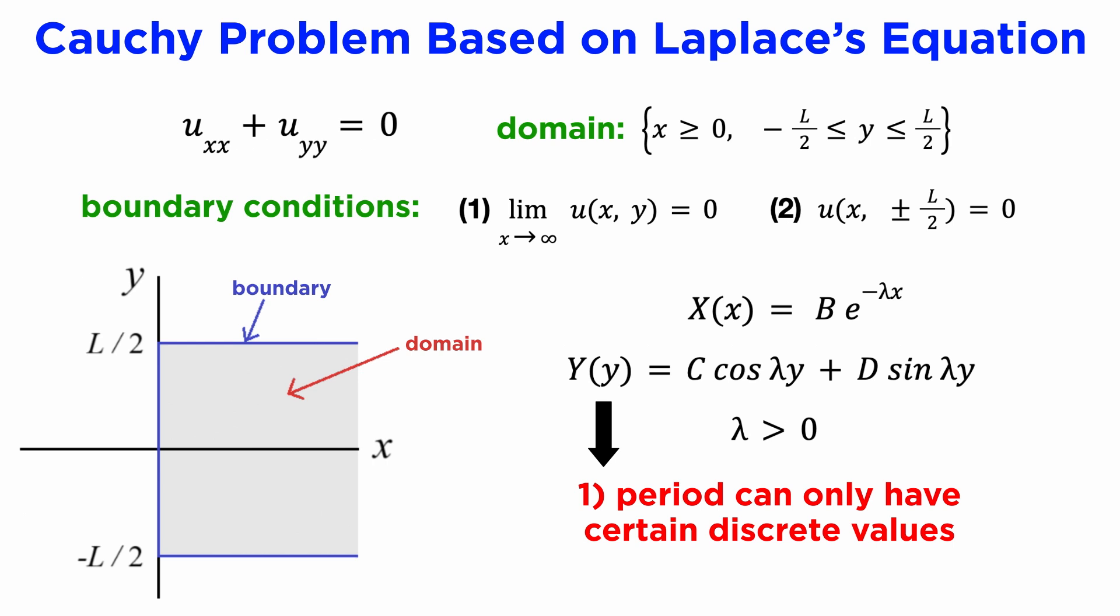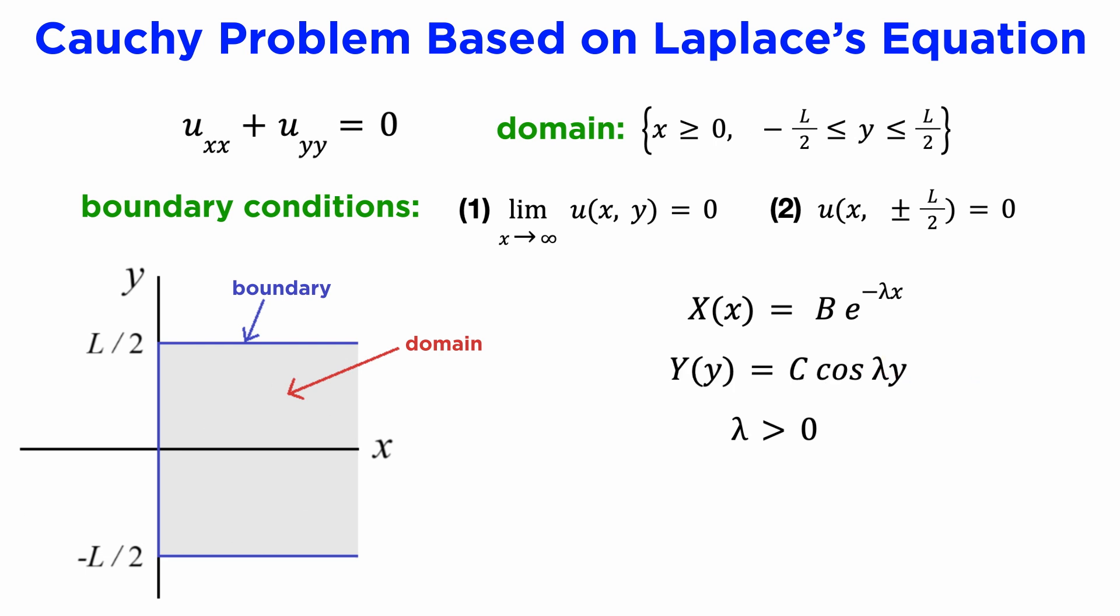And second, that it must be an even function. Given that y must be even, we can rule out the sine term right away, since sine is an odd function, while cosine is an even function. We can therefore set d equal to zero in our solution.